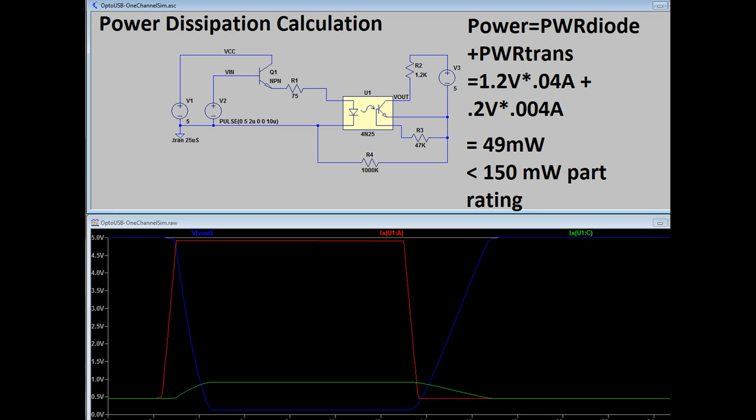So what about the power dissipation? Does driving that much current into the base cause a problem? Well, for this part, the power rating is 150 milliwatts and adding up the diode power and the collector emitter current times the voltage across it while the device is turned on is about 50 milliwatts. So it looks like it's well within the power profile of the part.